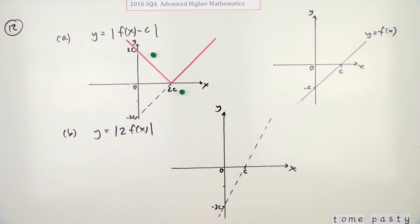But what you want is the modulus of it. So this negative portion flips up here. And the marks are again, one for it cutting through 2c, another one for it being all above, still staying at c.